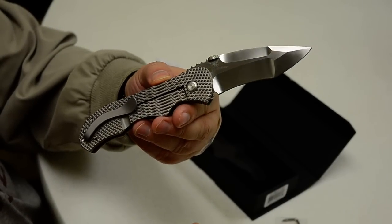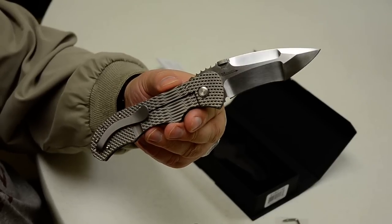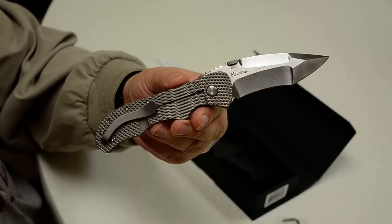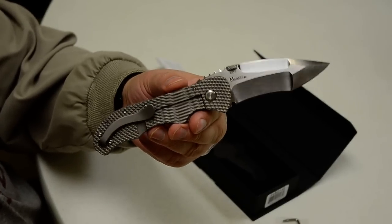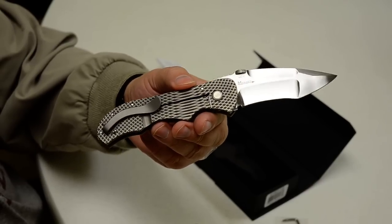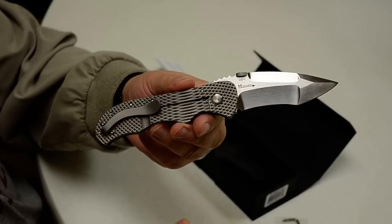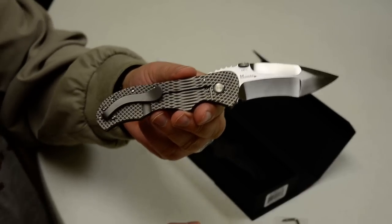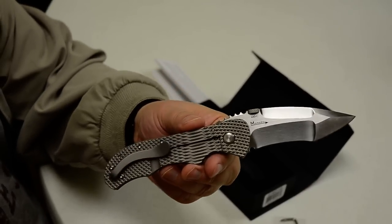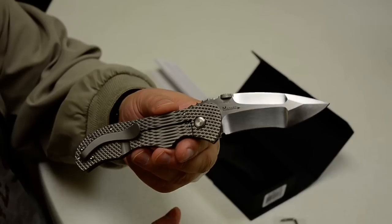It's 440C steel. The heat treat is everything on these steels. And I think 440C made properly is probably as good as 154CM. But I don't know about that. I'm not that experienced with knives. But I have pretty good confidence as long as it's heat treated properly.